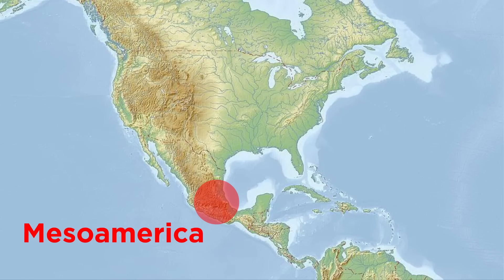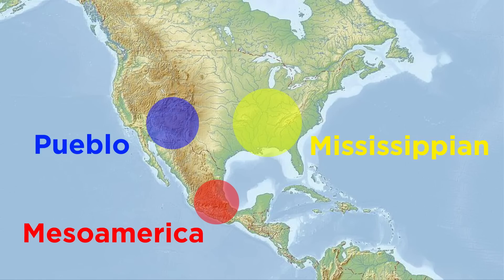As with other regions, the influence of this cradle of civilization spread north to the modern-day United States, becoming the Pueblo and Mississippian civilizations, and south through Central America.